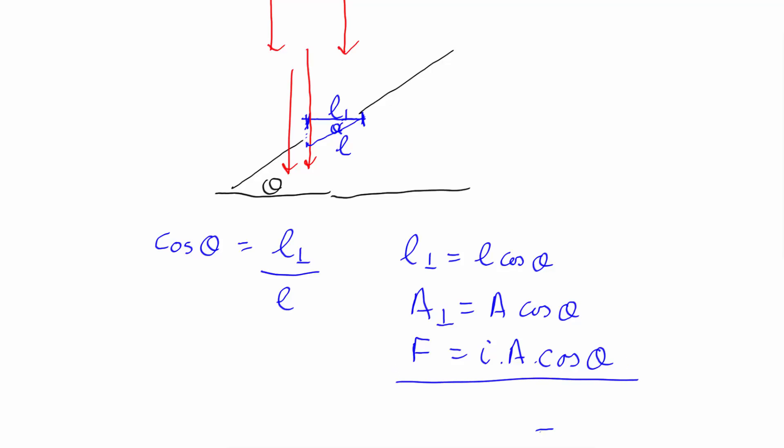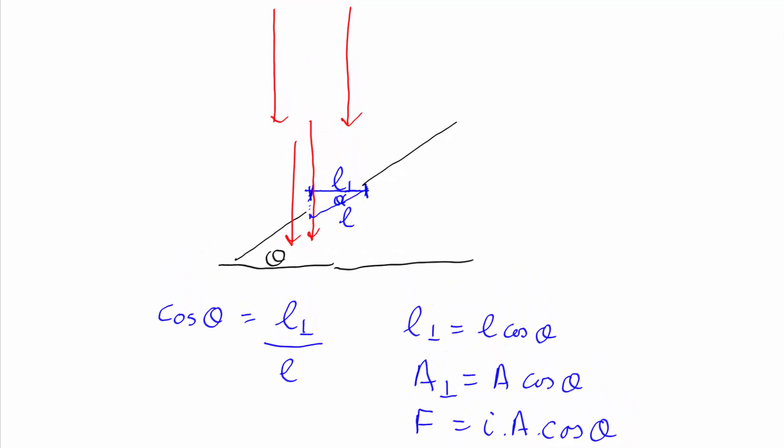Now that's one way to do it, but there is another way. Instead of replacing the window with an imaginary perpendicular window, we can break the radiation into its components. So we could have a perpendicular component to the radiation, so if you've got I there, we could have I perpendicular and I parallel.